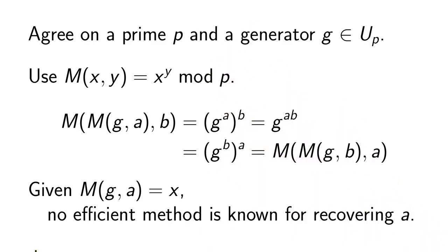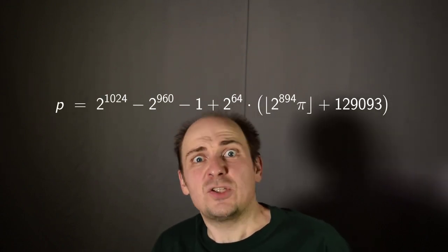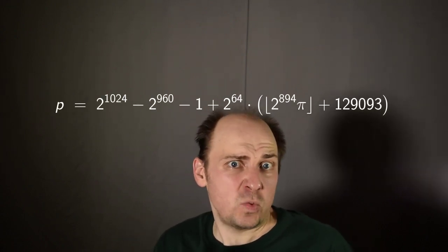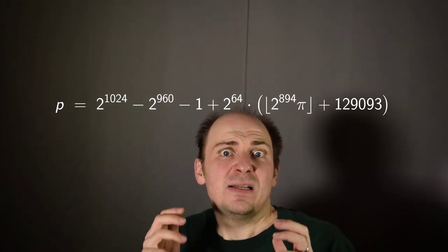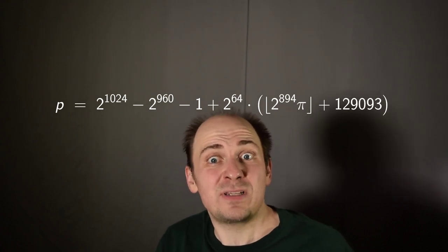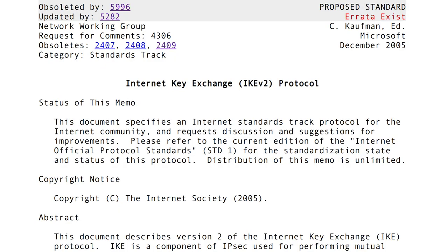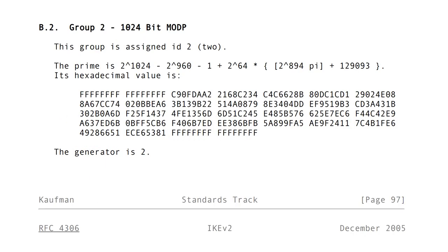One remaining question is which prime to agree on. Well, here's a prime number that Alice and Bob could agree on. 2 to the 1,024th power minus 2 to the 960th power minus 1 plus 2 to the 64th power times the quantity, the floor of 2 to the 894th power times pi plus 129,093. And this is an officially provided prime number for these purposes. I mean, if you look in some of the, you know, the closest thing the internet has to governance documents, these RFC documents, you'll see this prime number listed there.